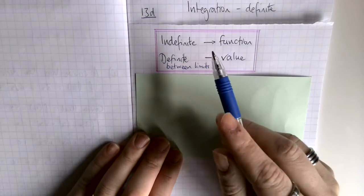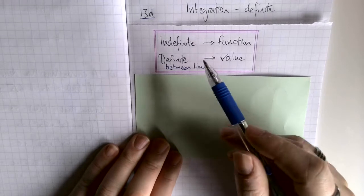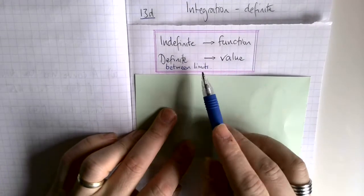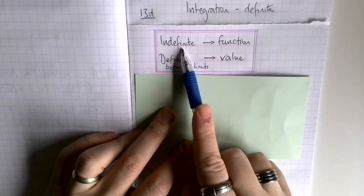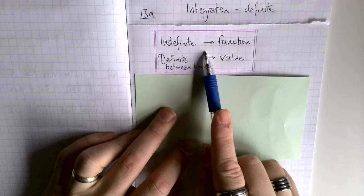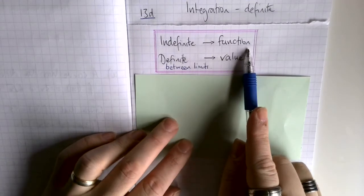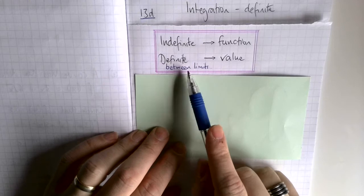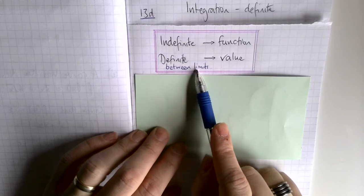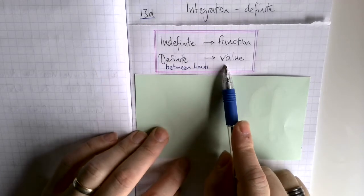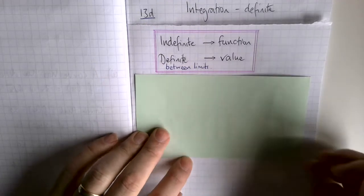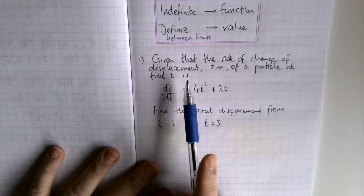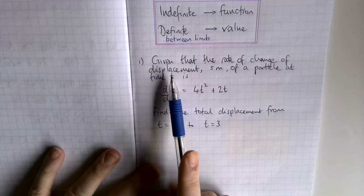I've already looked at indefinite integration and mentioned definite integration, so that's what we're looking at here. For an indefinite integral you end up with something that is a function in terms of x. For a definite integral, which we do between limits, we end up with a value. I'll show you an example.